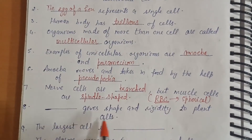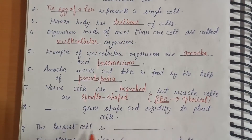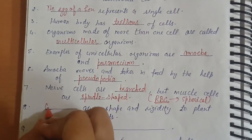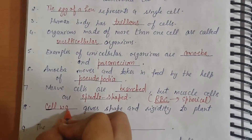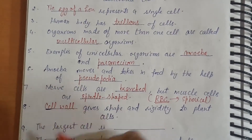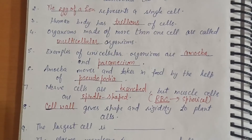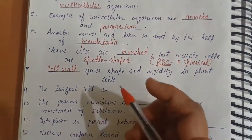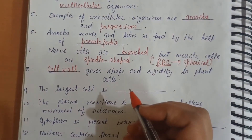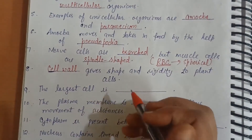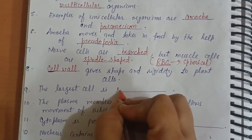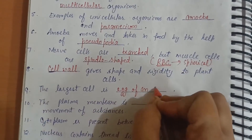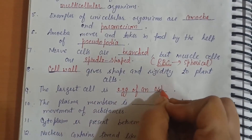Eighth, the cell wall gives shape and rigidity to the plant cell. Ninth, the largest cell is the egg of an ostrich.